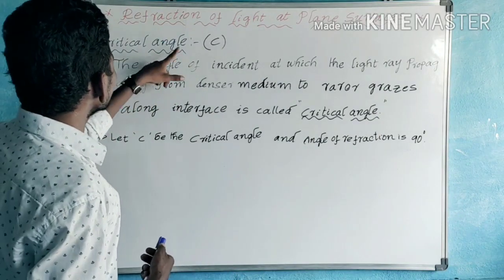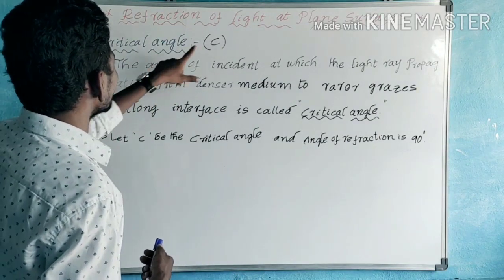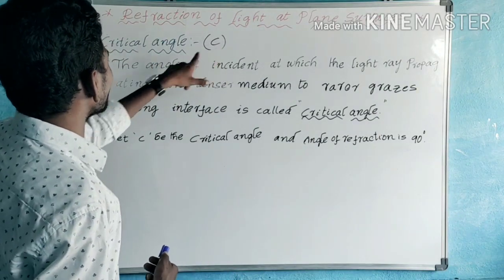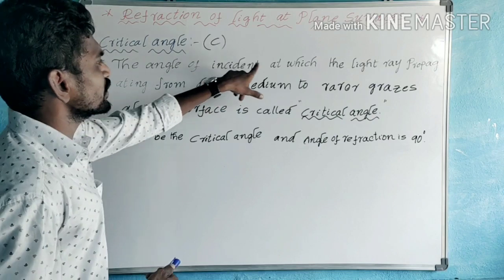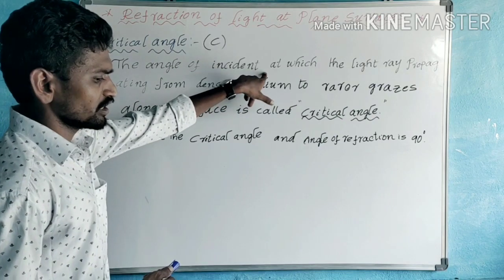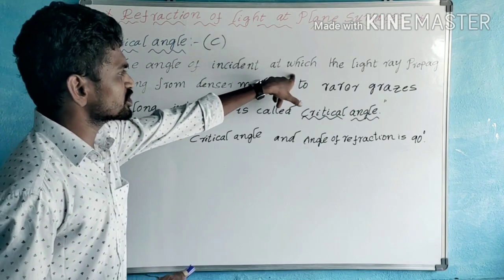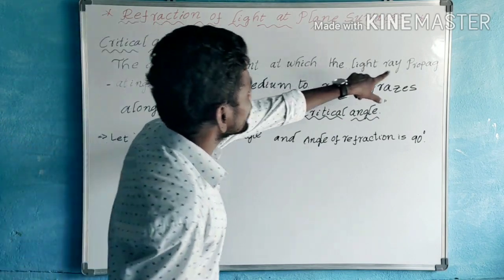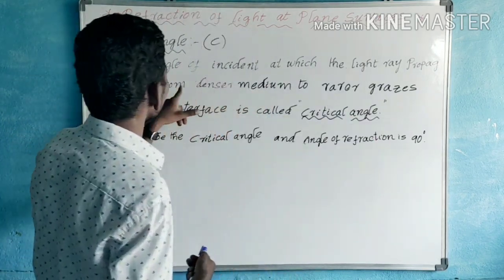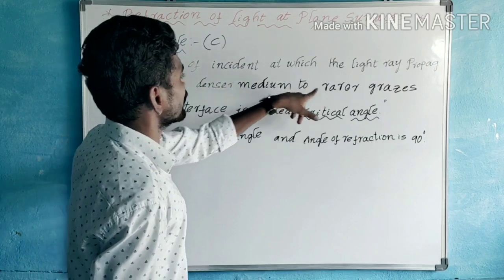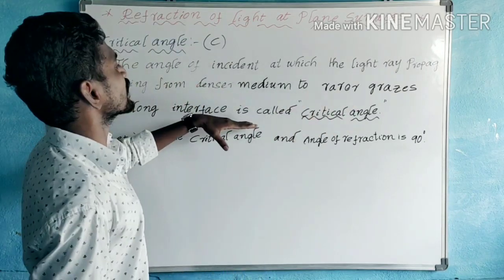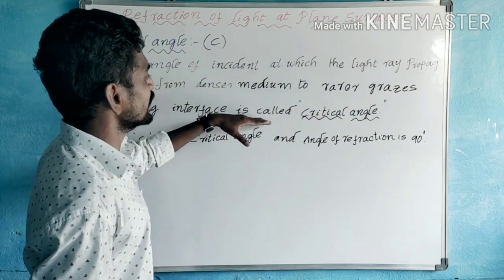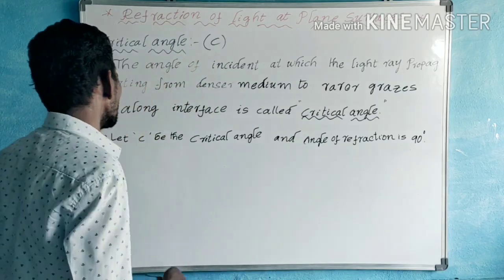What is the critical angle? It is denoted by the capital C. The angle of incidence at which the light ray propagating from denser medium to rarer medium grazes along the interface is called the critical angle.